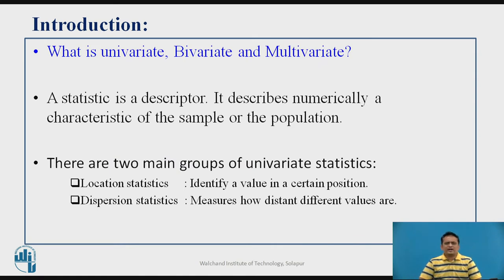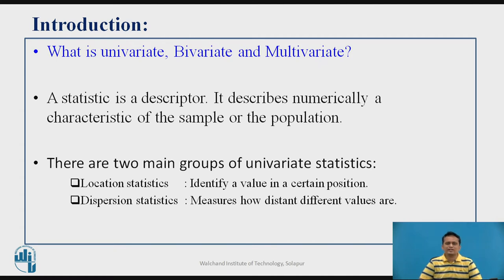First, what is univariate analysis? Data analytics may be done on different attributes. How many attributes you are considering simultaneously determines the type of analysis. If only one attribute is considered, it becomes univariate. If you are analyzing two attributes simultaneously, that becomes bivariate analysis, and more than two attributes considered simultaneously becomes multivariate analysis.